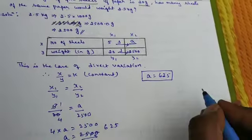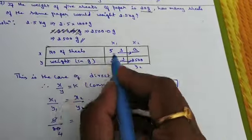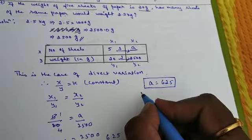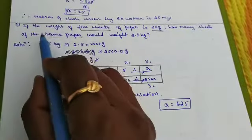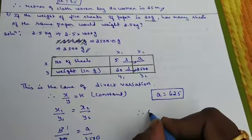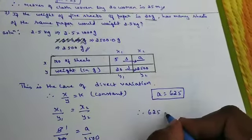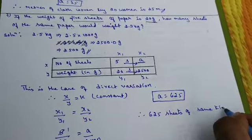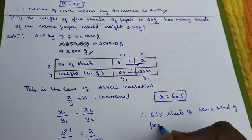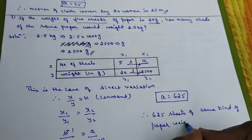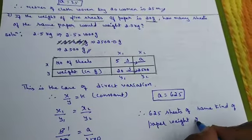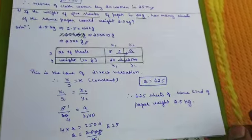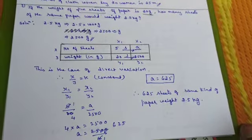Write down the end statement. What is A? A is the number of sheets for 2.5 kg or 2500 grams. So what he asked: how many sheets of the same kind? Therefore 625 sheets of same kind of paper weighs 2.5 kg or 2500 grams. This is how we have to solve question 7.